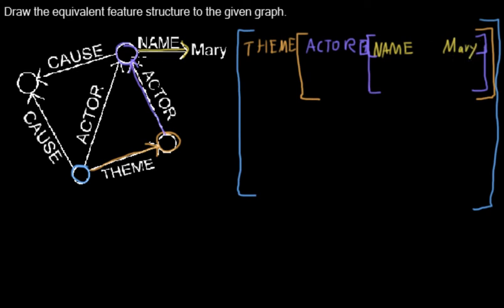But we are not done yet. The node has another outgoing edge CAUSE which points to another node. So I have to add another property which is called CAUSE and points to another node. So I will represent this by a new pair of brackets.